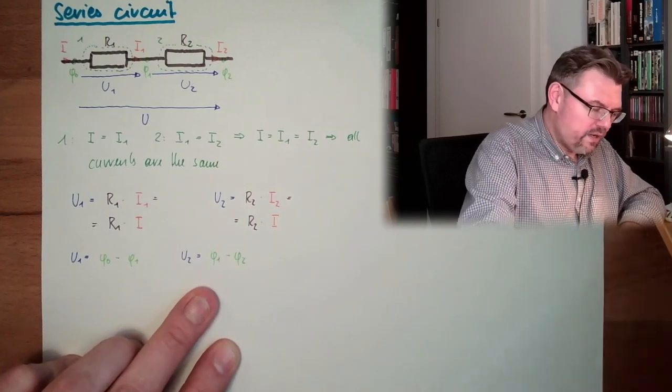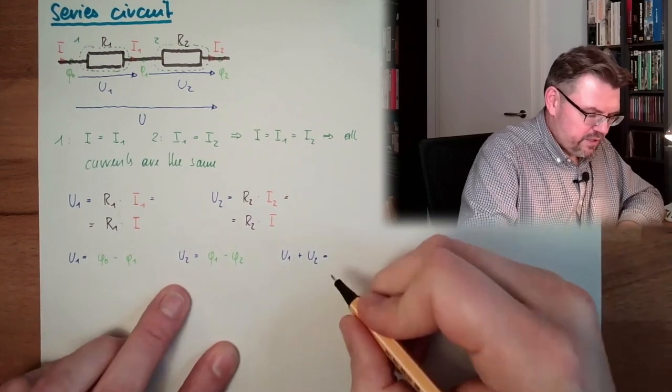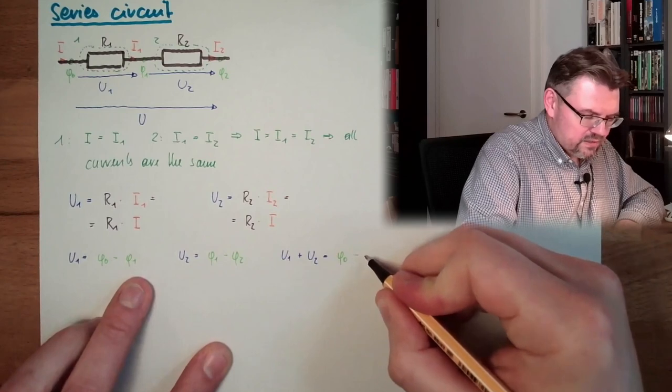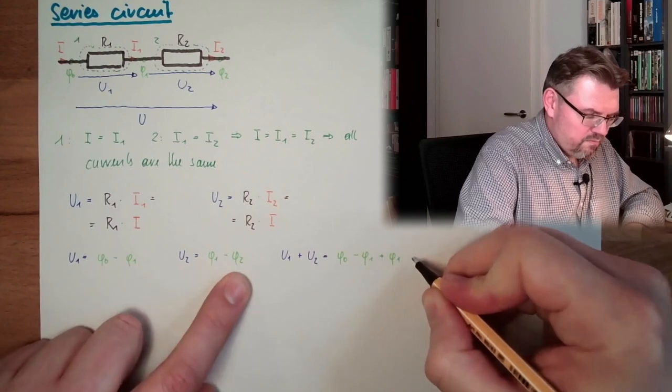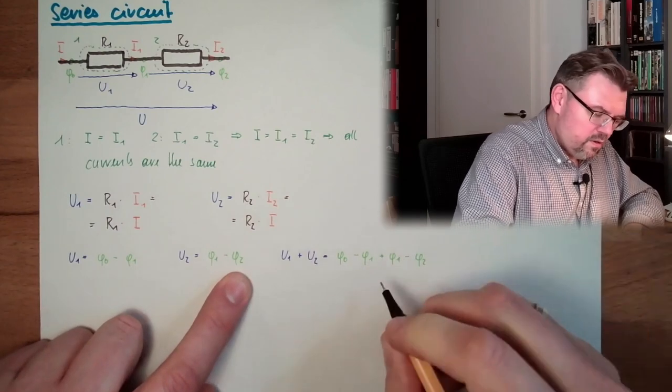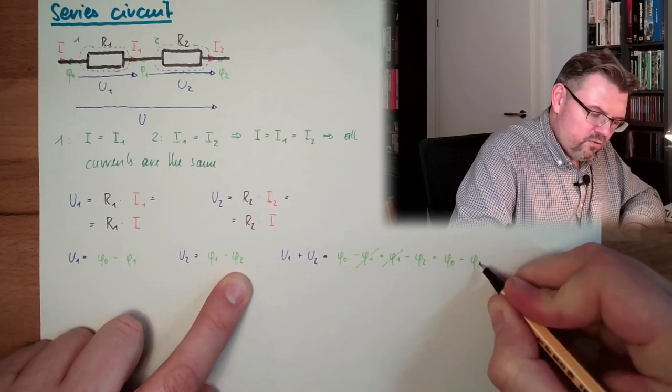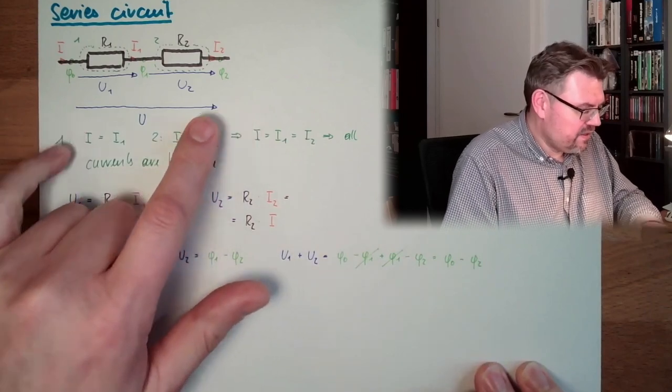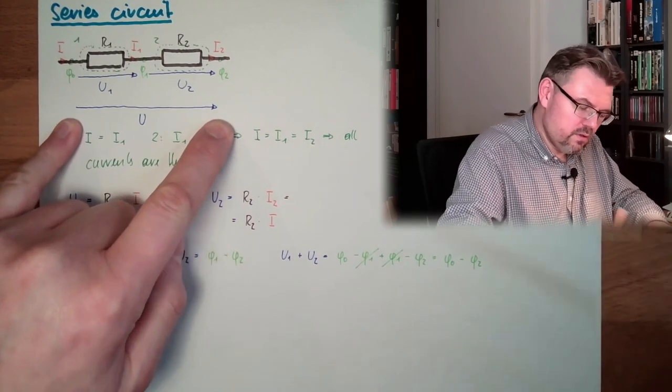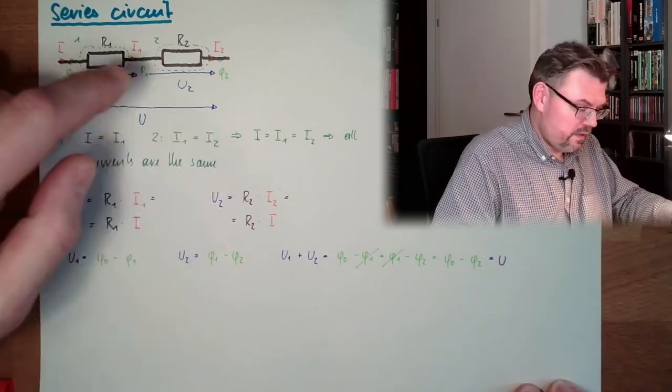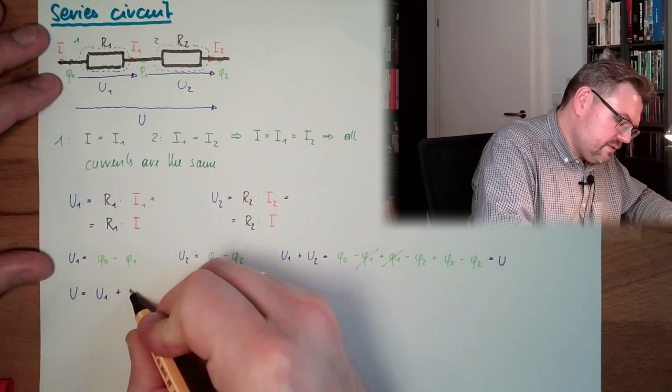Now let's see what is U1 plus U2. Let's have a look at the potentials: V0 minus V1, this is U1, plus V1 minus V2, this is U2, equals V0 minus V2. And actually, if you look at this, V0 minus V2 is the difference, this voltage. This is U. So U actually is U1 plus U2.